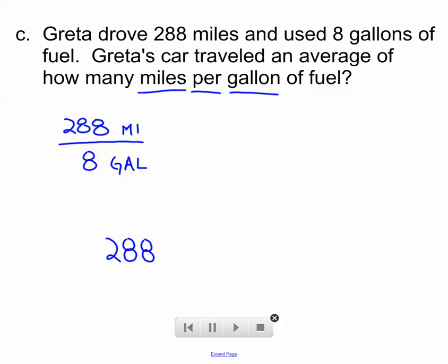I'm going to use some long division here. 8 goes into 28 three times with 4 left over. And 8 goes into 48 exactly six times. So Greta's average fuel consumption here is 36 miles per gallon. For every one gallon, she goes about 36 miles.